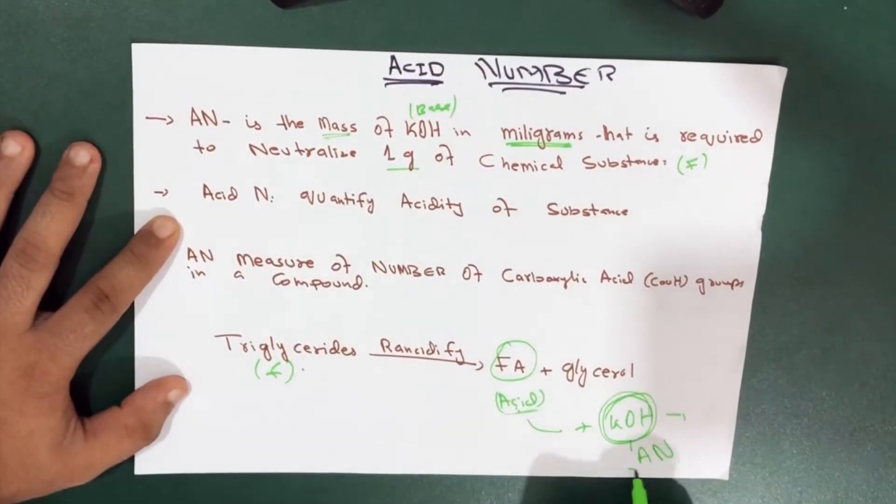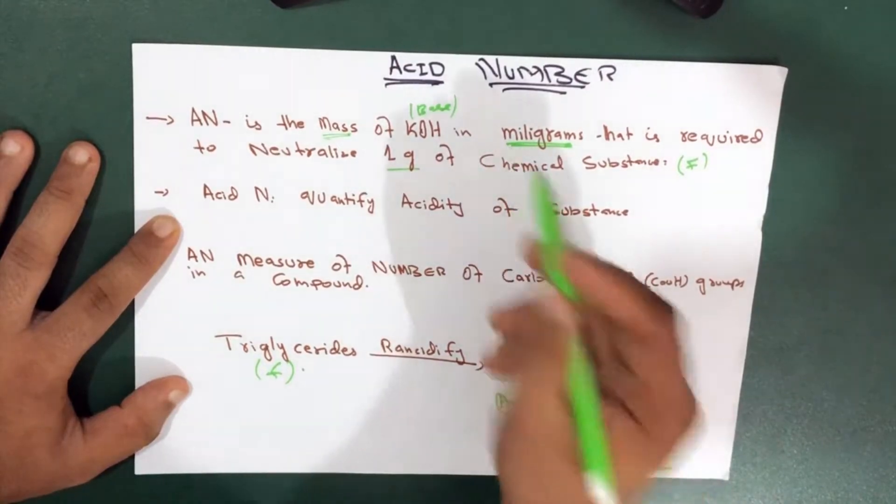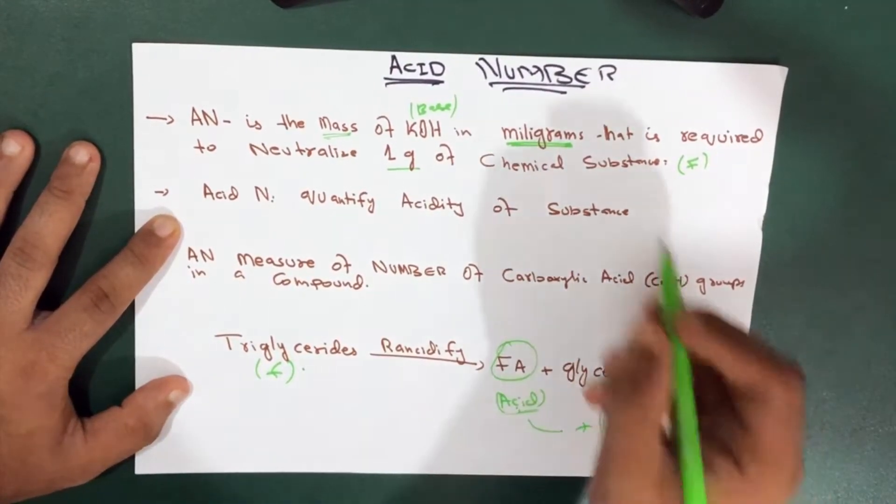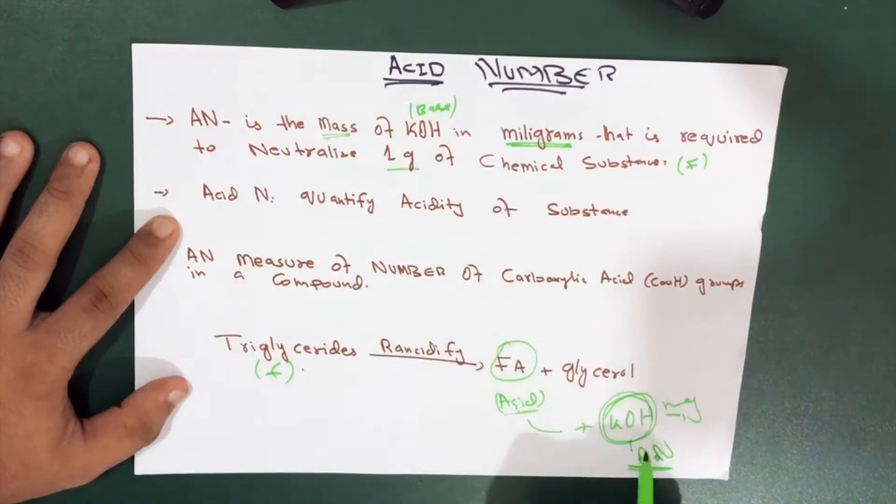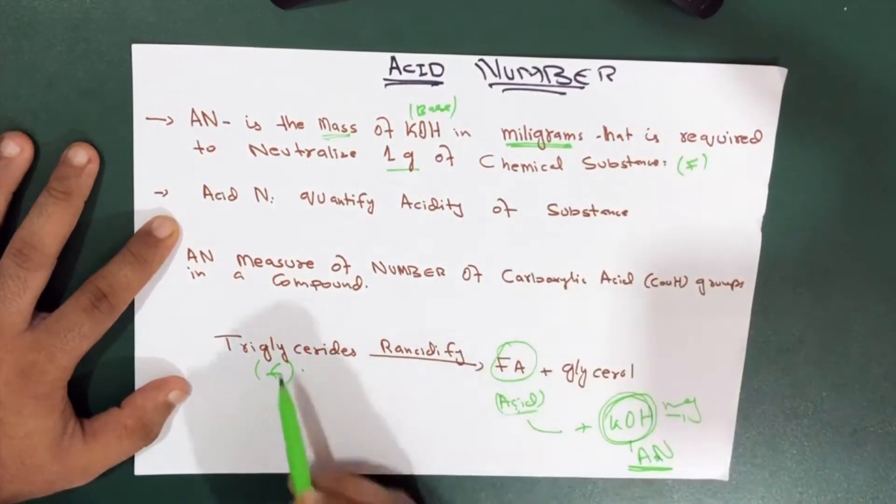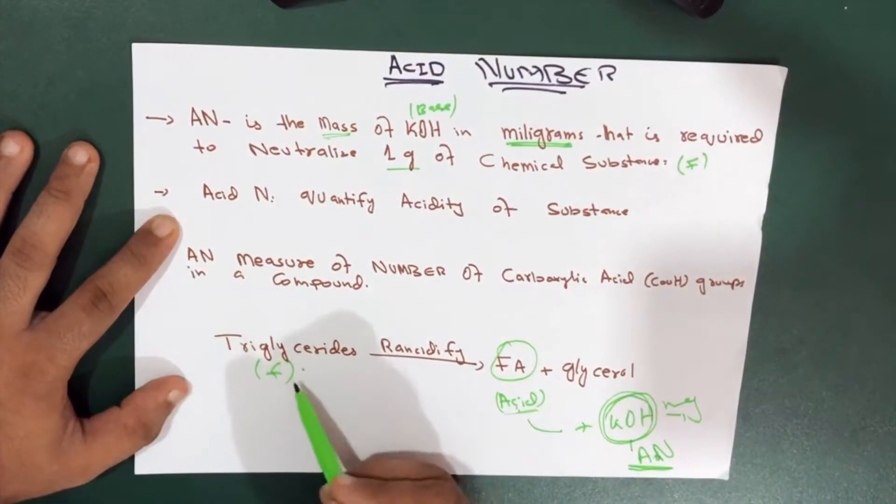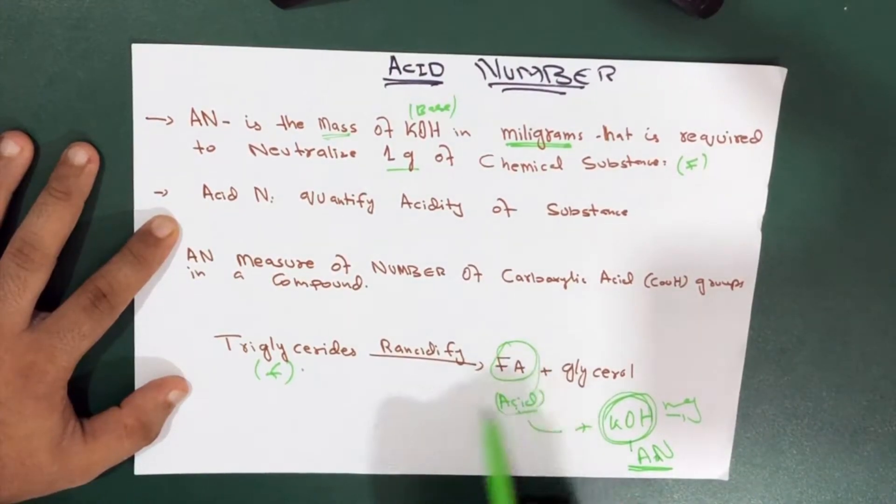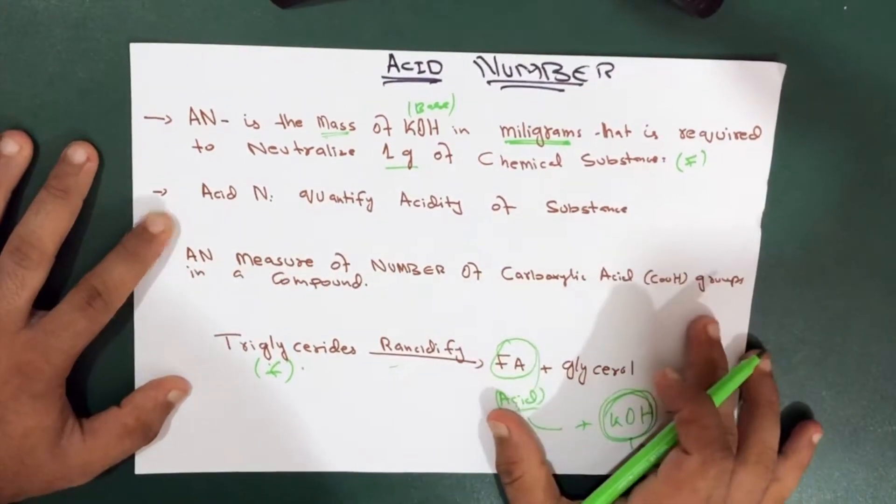So acid number is the mass of potassium hydroxide in milligrams that is required to neutralize what? One gram of chemical substance, for example fats. So how would we neutralize the fat? We will neutralize the fatty acid, right? Convert the triglyceride to rancidified fatty acid and glycerol. So this is it.